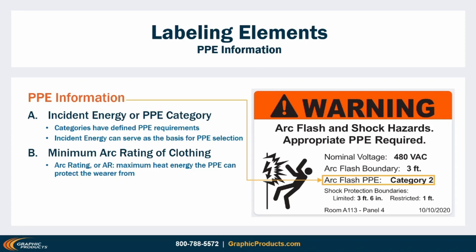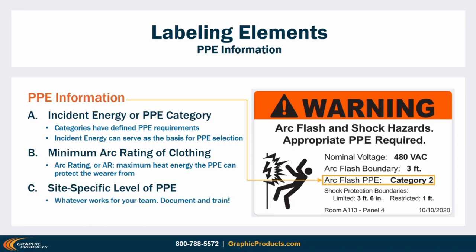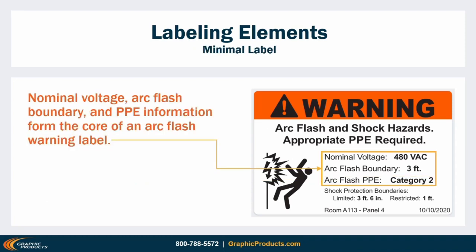Experts often recommend the minimum arc rating approach because it simplifies the job for the worker on site and allows informed decisions based on what equipment is actually available in the workplace. Finally, there's a catch-all option for any other system that works well for your facility — some common choices include an itemized list of required PPE elements or a company-defined category system like a color code. As long as the system is clearly identified, documented, and your workers are trained to understand it, you have a lot of leeway. Those details — nominal voltage, arc flash boundary, and PPE — form the core of an arc flash warning label.